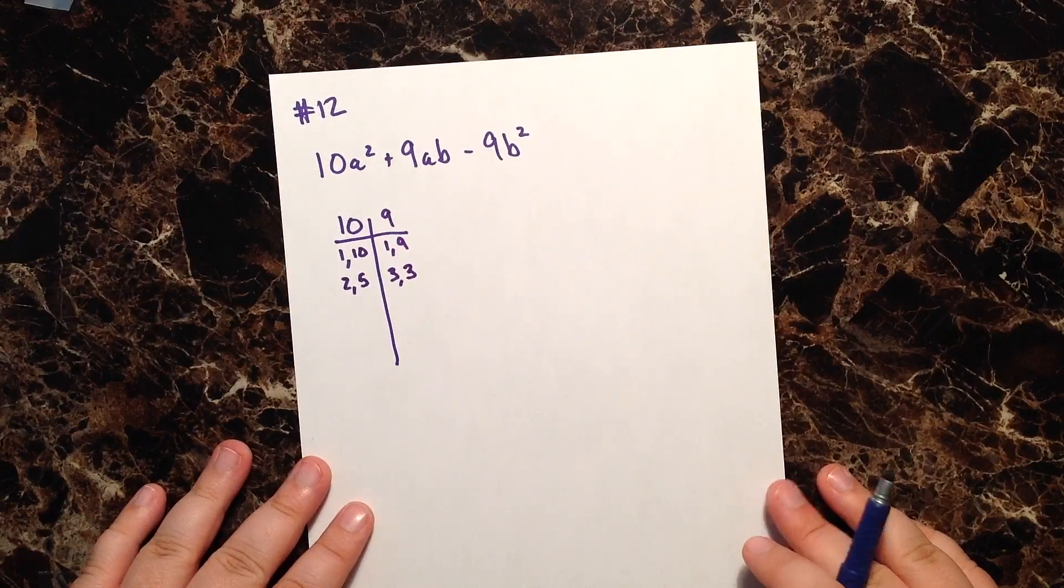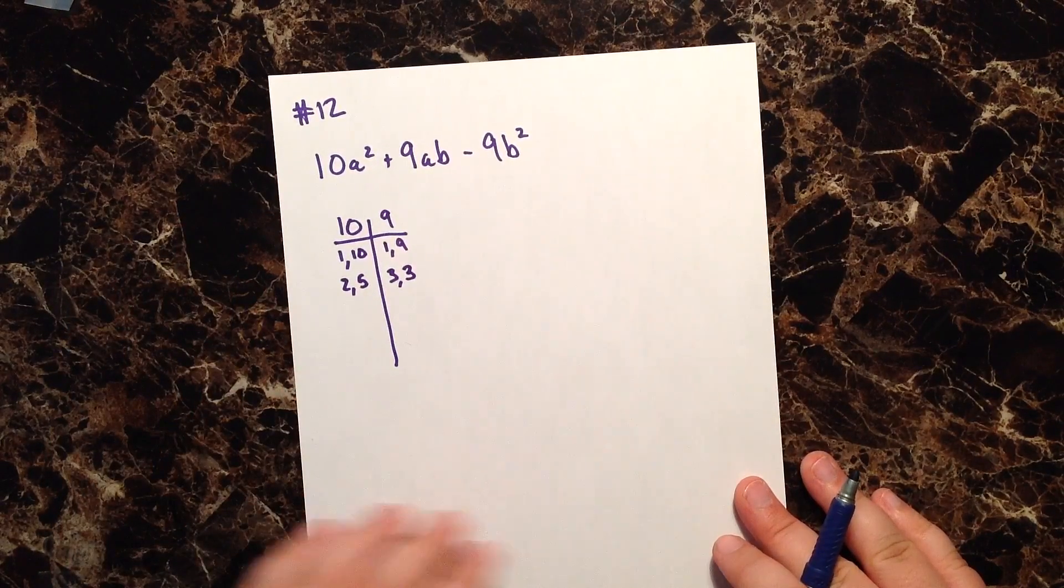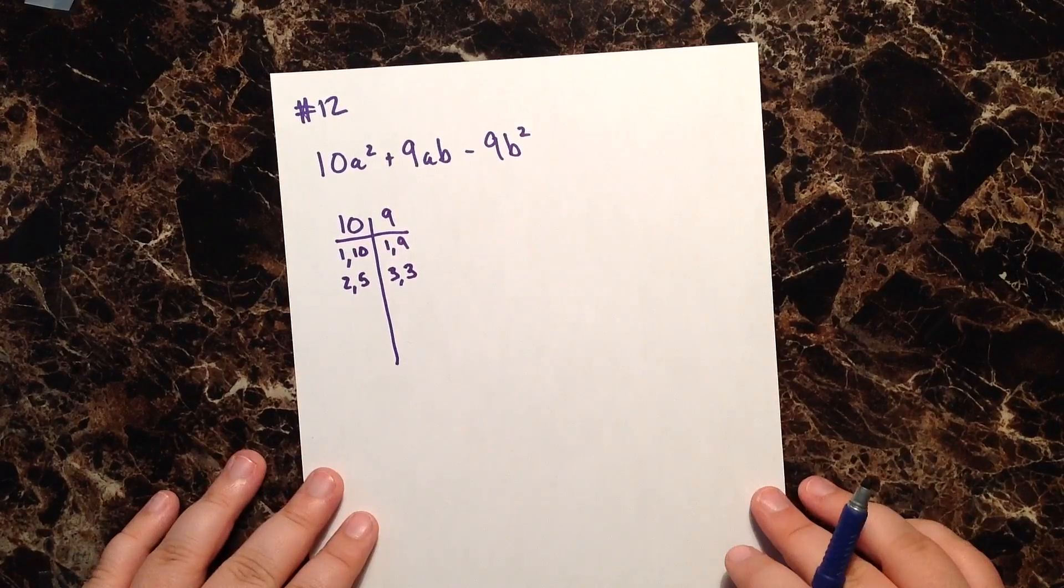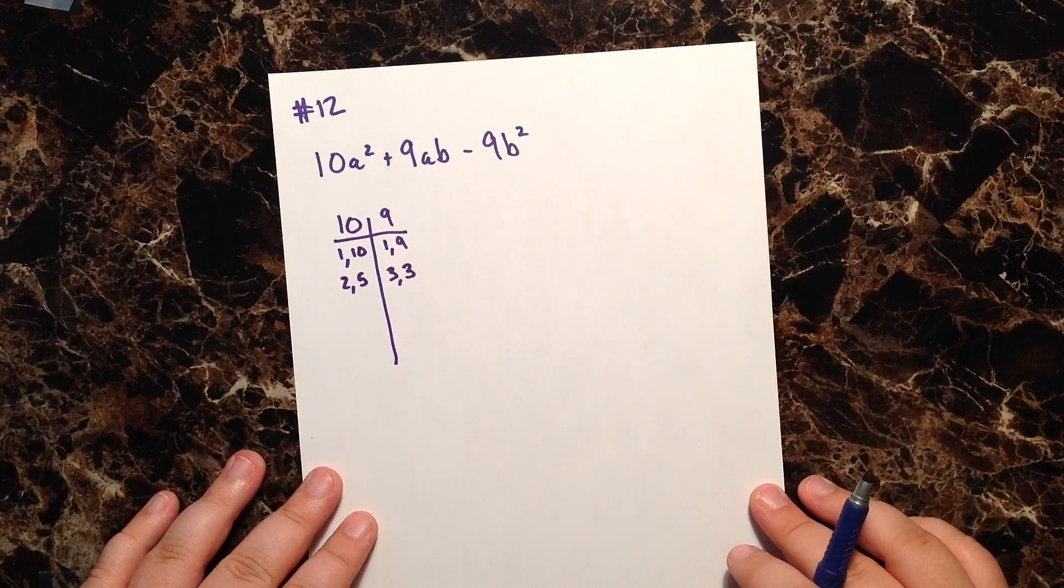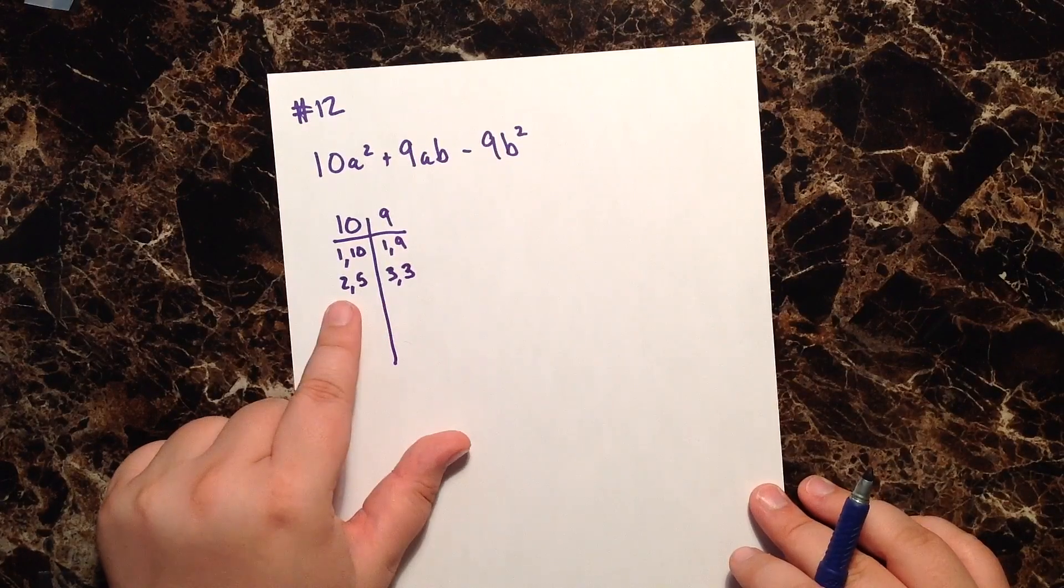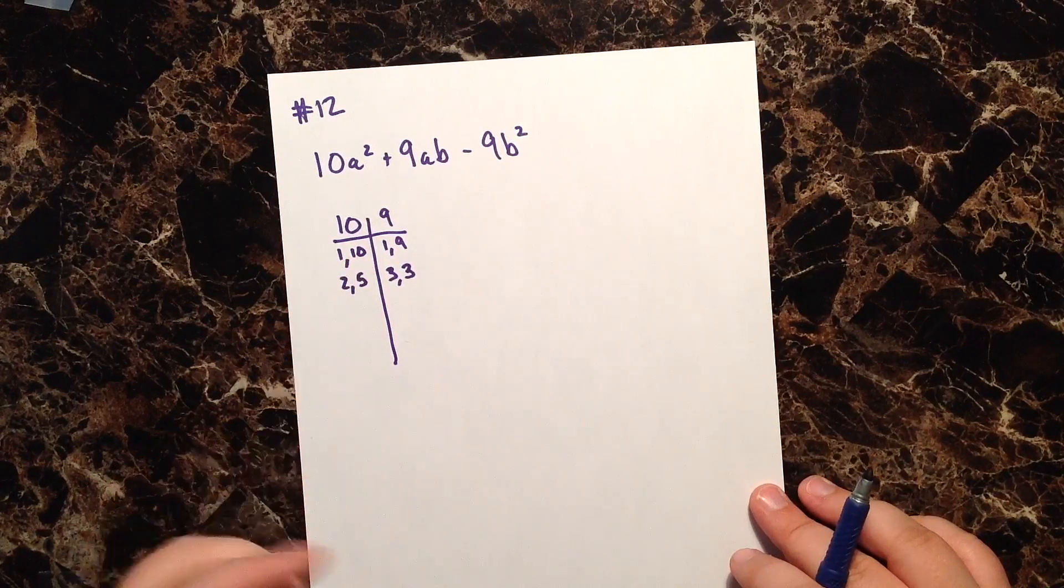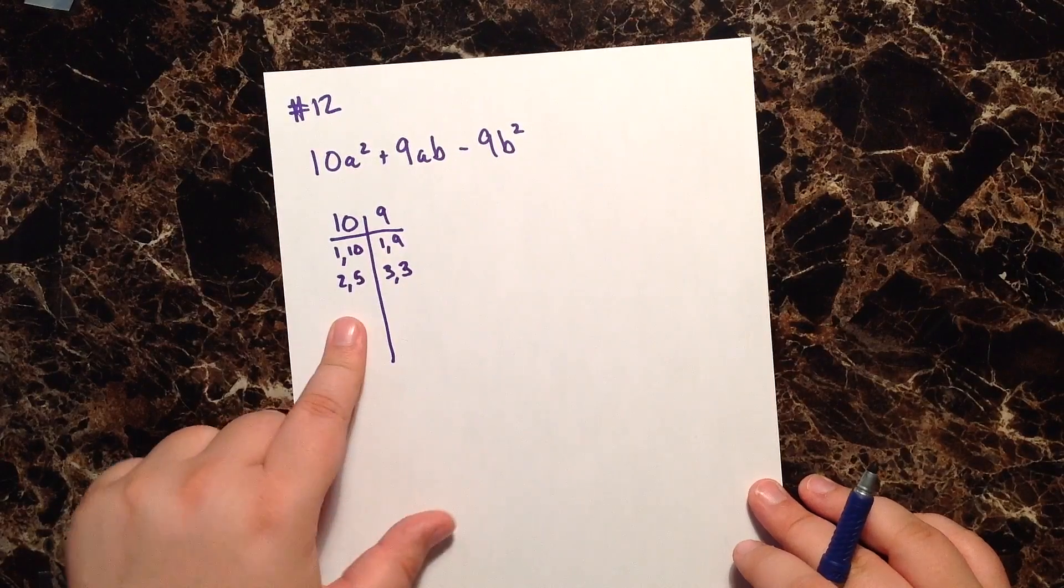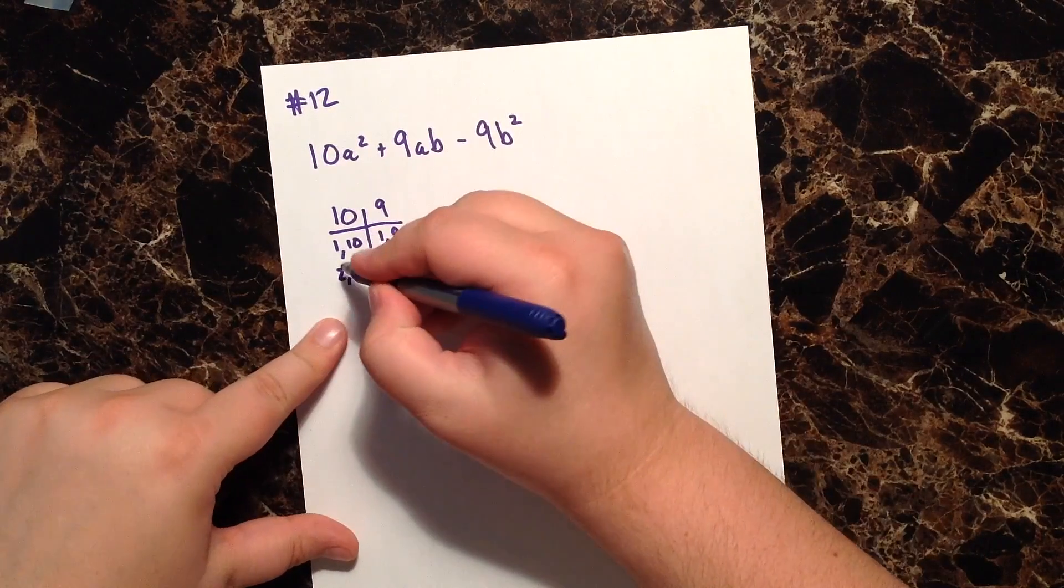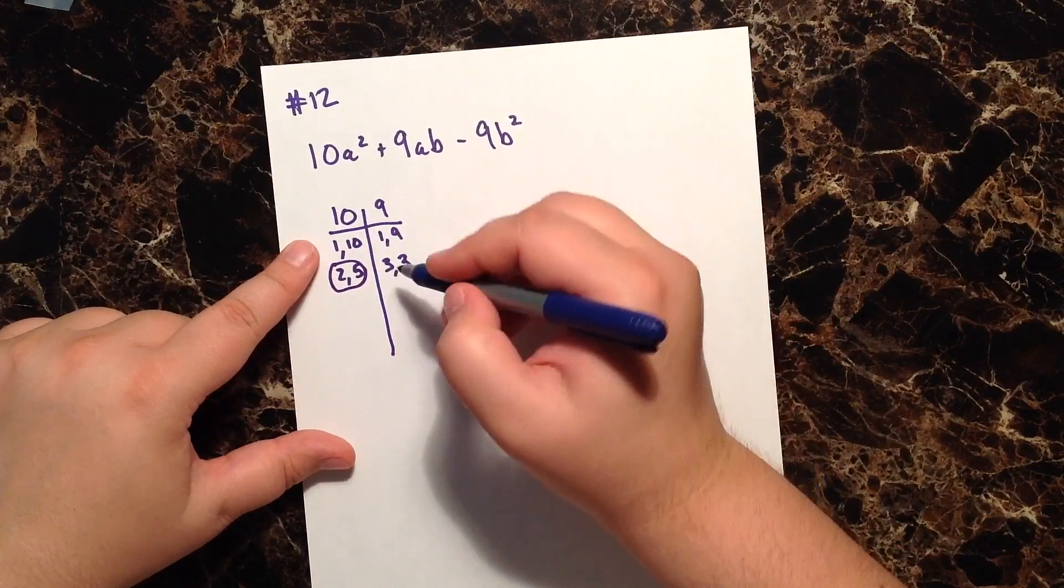A little tip for you, when you are listing your factors and you're going to start to test them in the actual scissors method, start with the factors that are closest together, meaning 2 and 5 are only 3 units apart, whereas 1 and 10 are 9 units apart. So start with the factors that are closest together, in this case, 2 and 5 are closer together than 1 and 10.